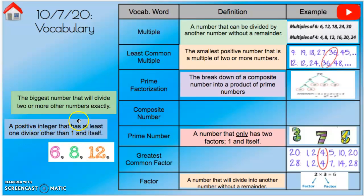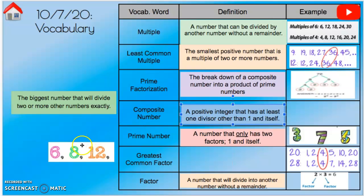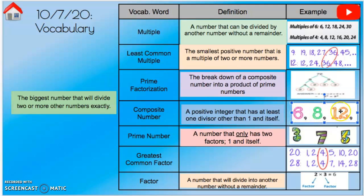A composite number is a positive integer that has at least one divisor other than one and itself. Six is a composite number because one times six equals six AND two times three equals six — there's another factor pair beyond just one and itself. Same with eight: one times eight and two times four. Same with twelve: there's more than one factor pair.